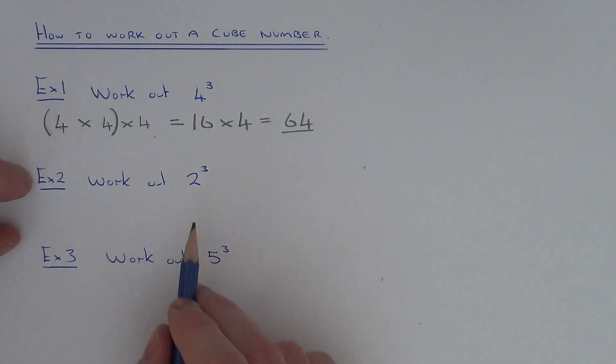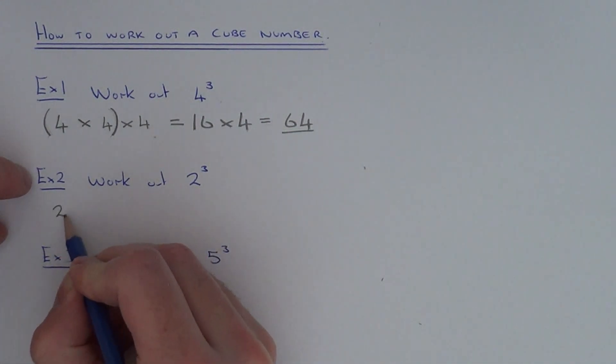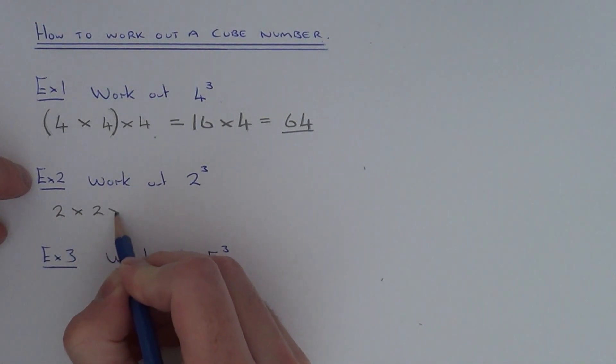Let's move on to example 2, so this time we need to work out 2 cubed. Write down 2 three times and put multiplication signs between the twos.